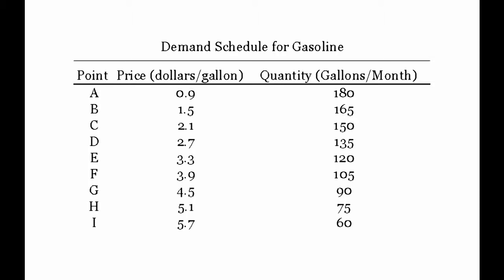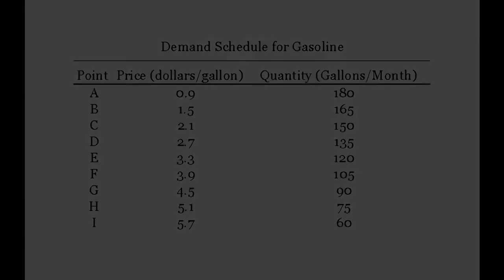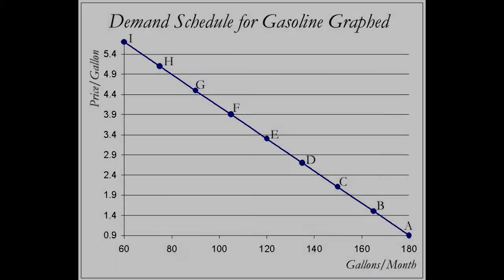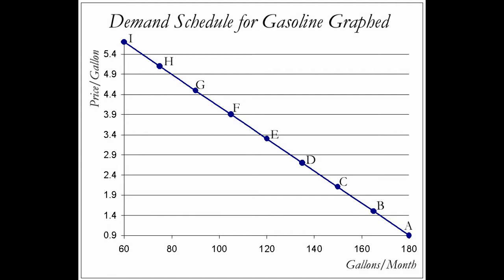Let's take the demand schedule and graph it. It is convention to see the price of the good represented on the vertical axis while the quantity consumed is represented on the horizontal axis of a demand graph. The points A to I from the demand schedule have been plotted, labeled, and joined with a solid line. Note that the slope of the line connecting points A to I is negative, which reflects the inverse relationship between price and quantity consumed.